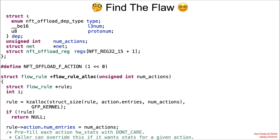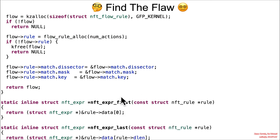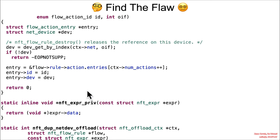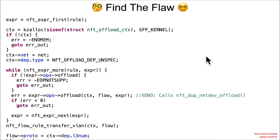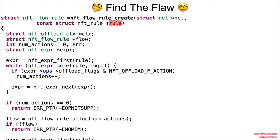There's going to be a whole bunch of code for you to find the flaw in. Most of this is just giving you definitions — how this is defined, how that is defined. But really where I want you to start is with nft_flow_rule_create, and it takes in an attacker-controlled rule.